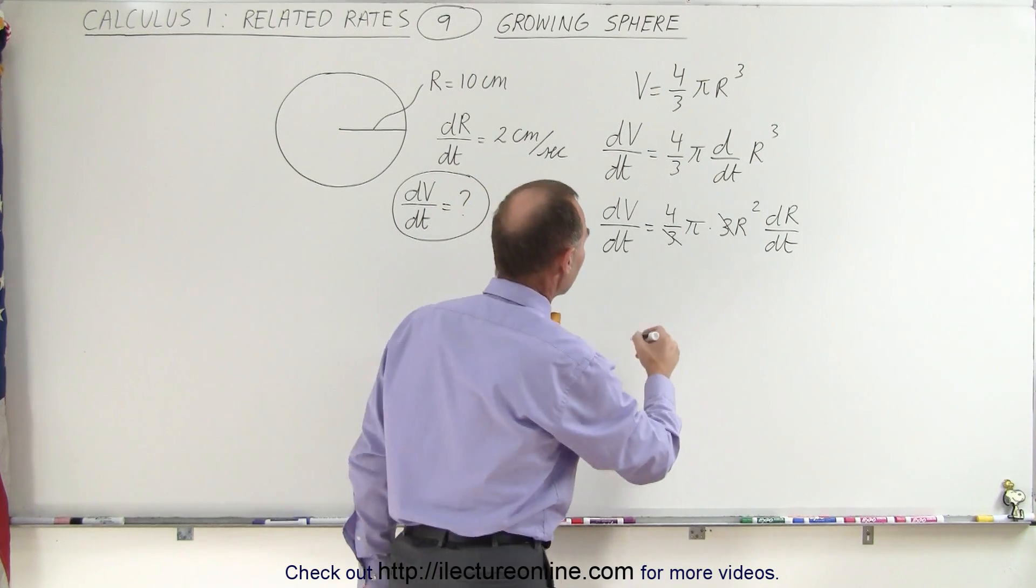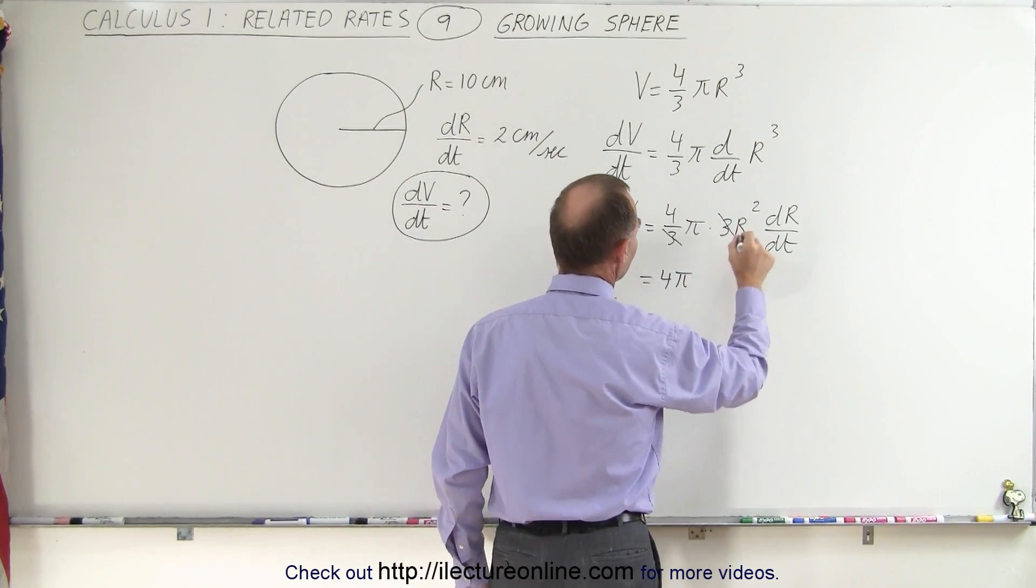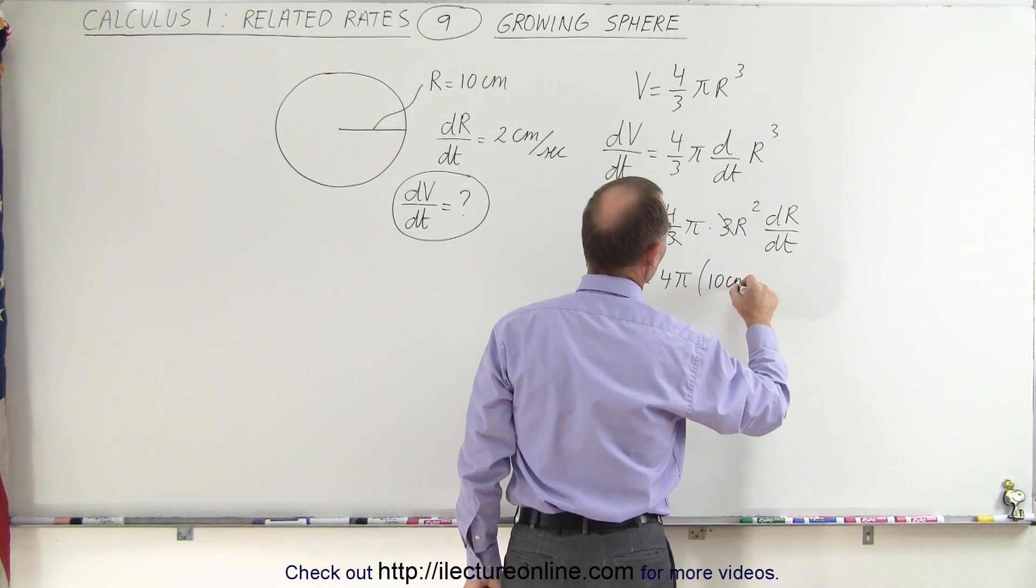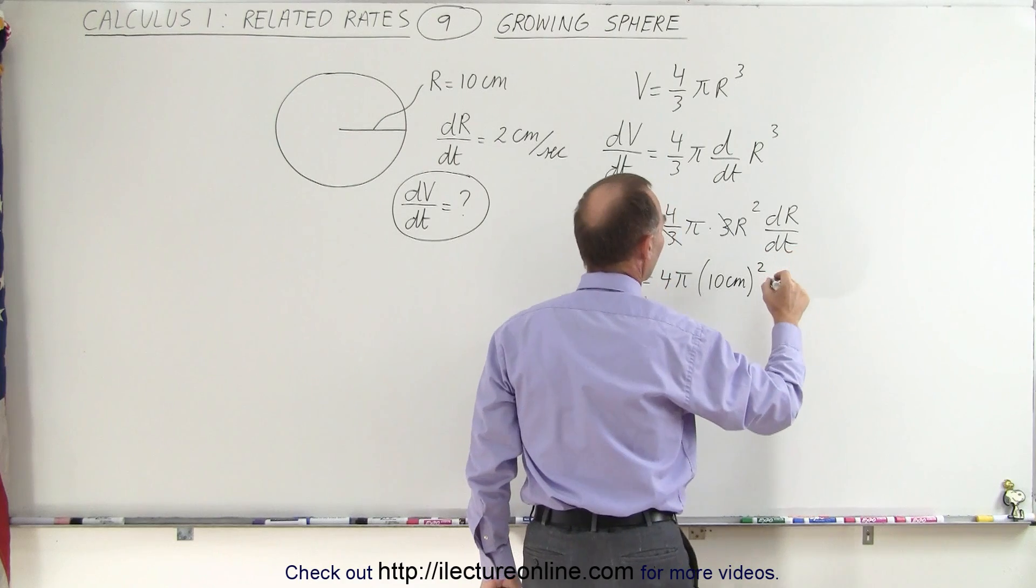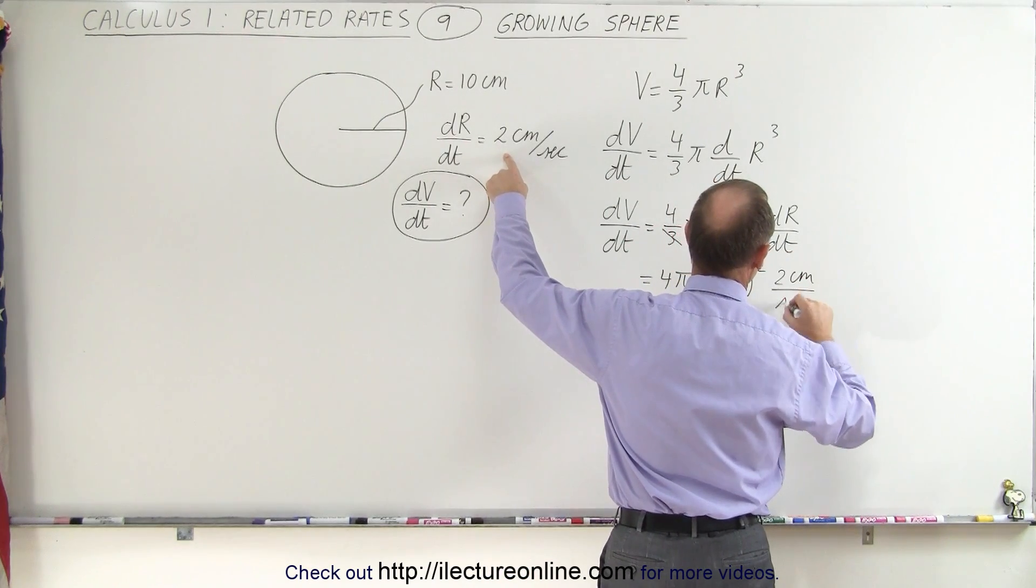Then we plug in everything we know, so this is equal to 4 times pi times r squared, which is 10 centimeters, so 10 centimeters squared, and then the dr/dt, which was given to us as 2 centimeters per second.